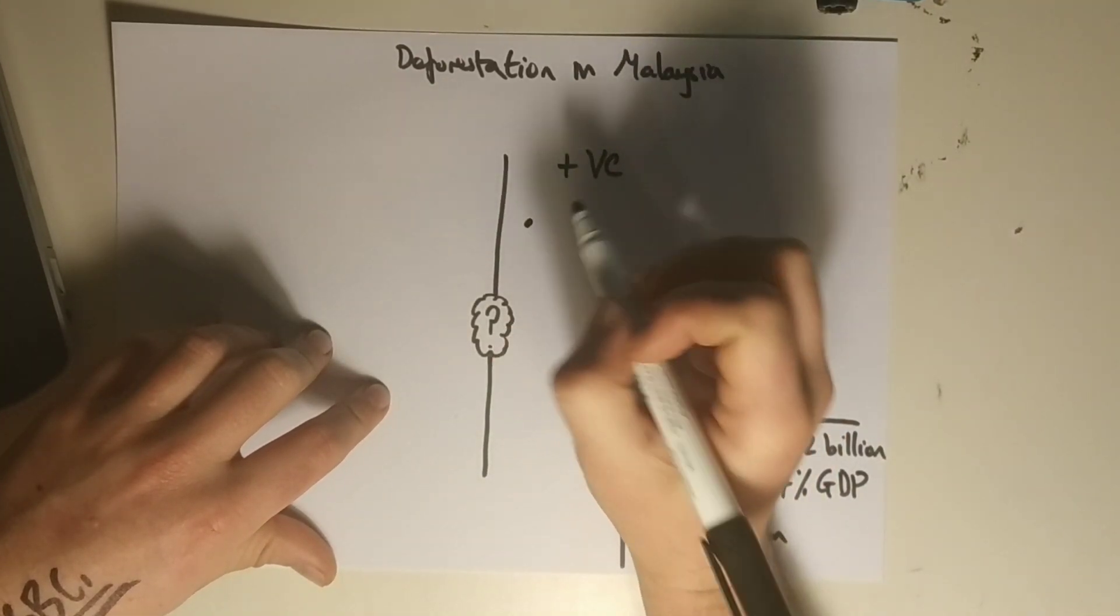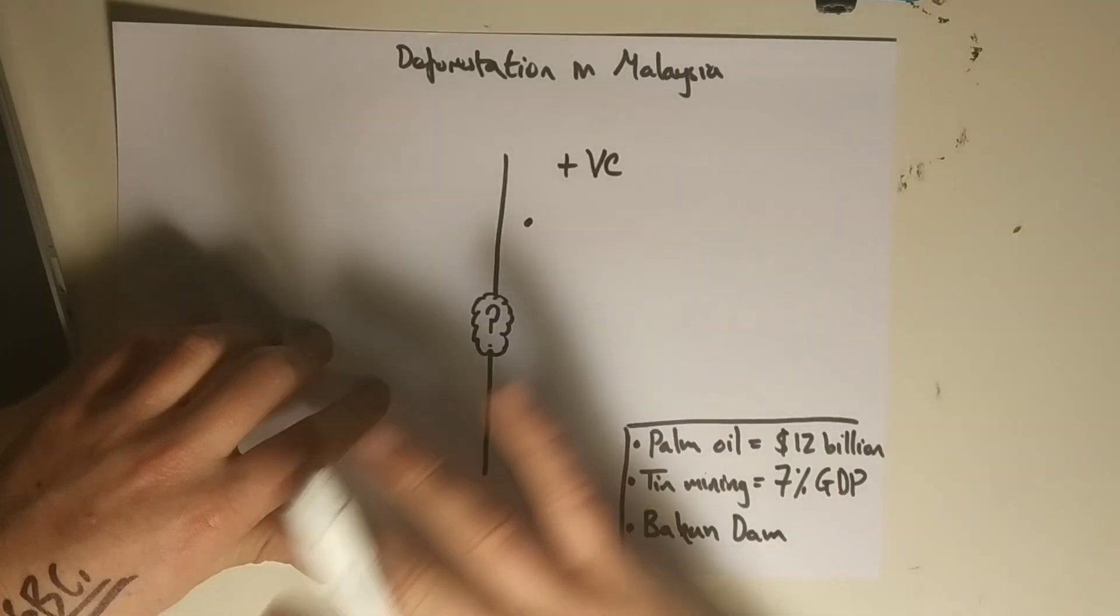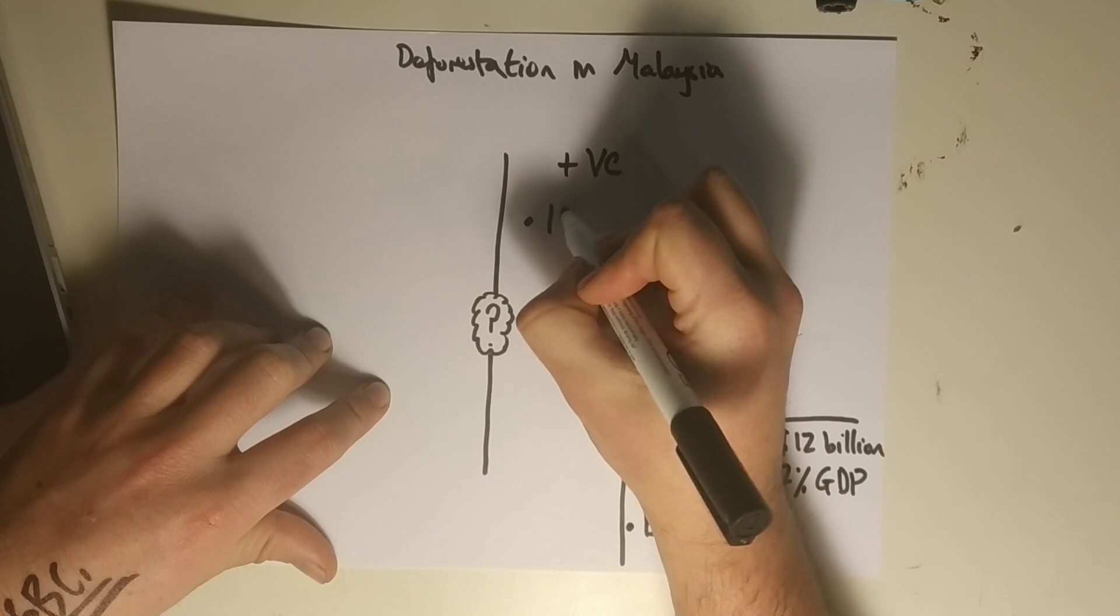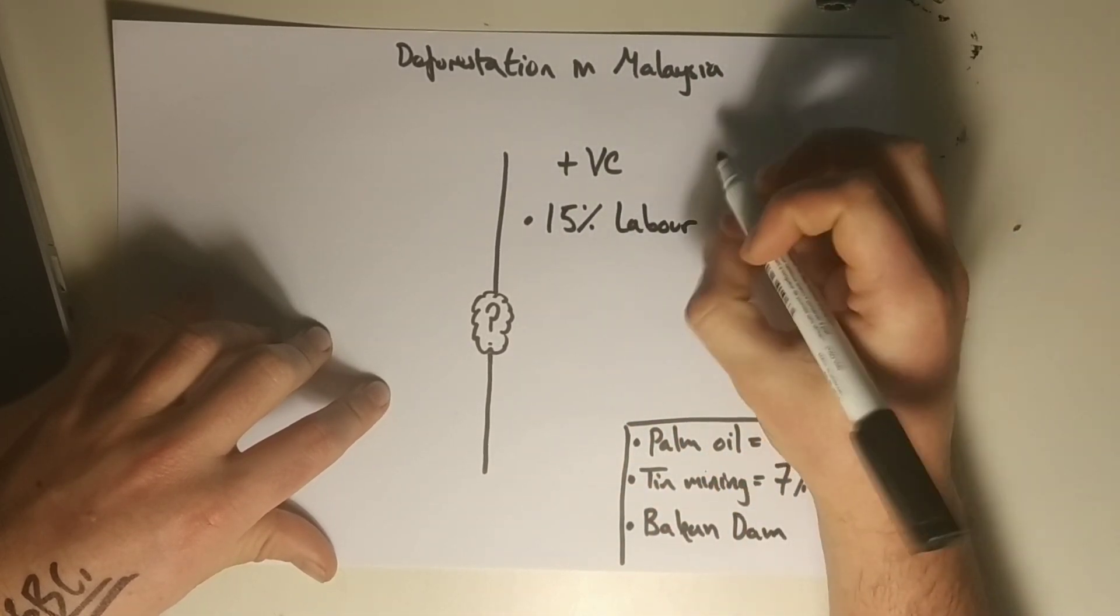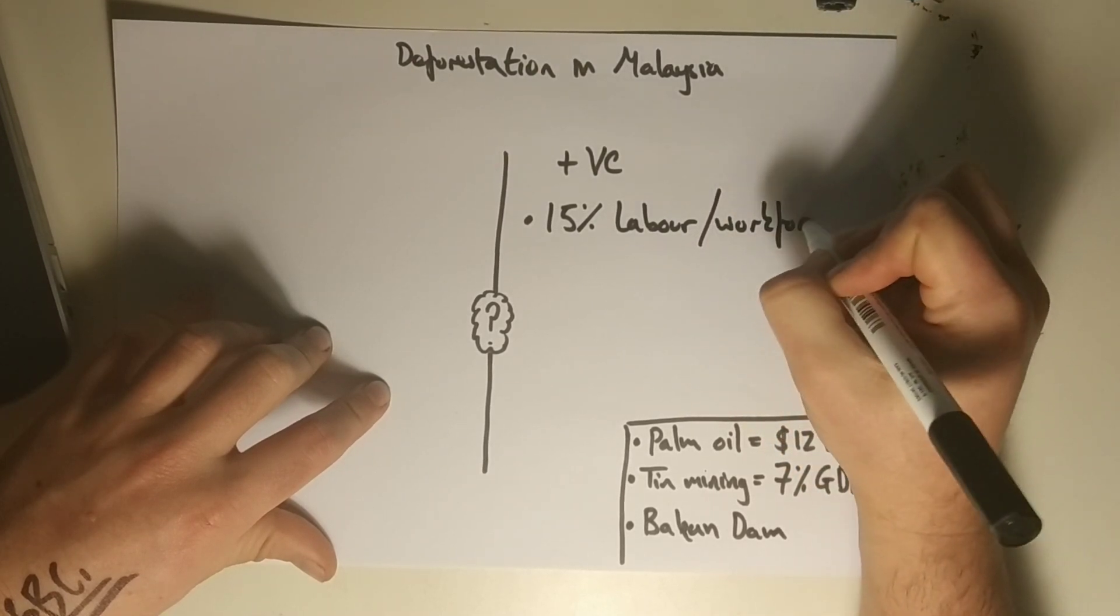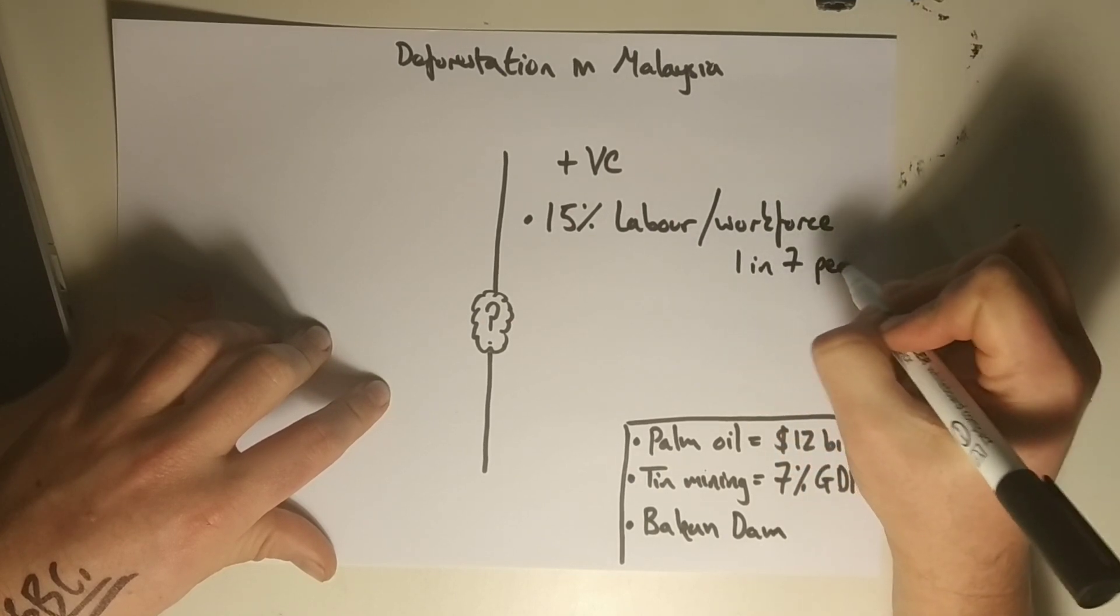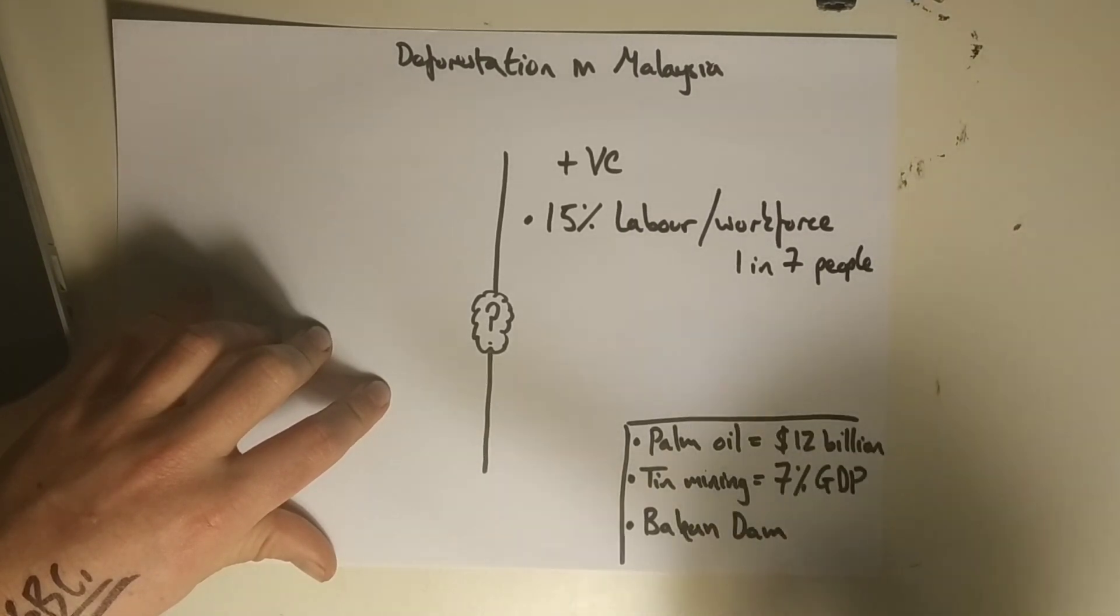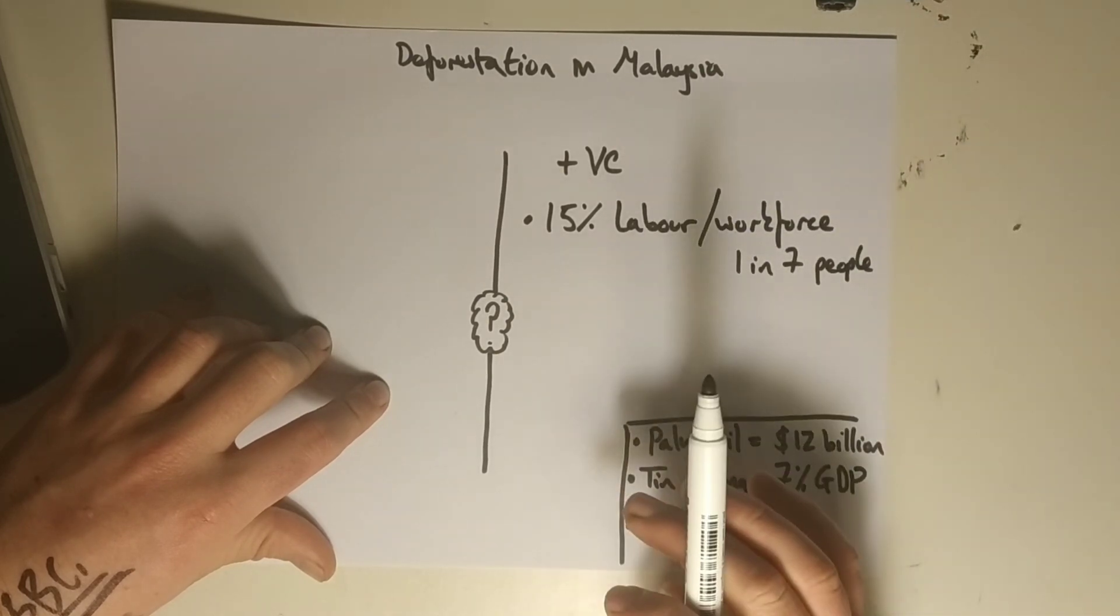First of all, industries in Malaysia that are related to deforestation, whether that's in agriculture or directly in deforestation, make up about 15% of the labour force, the workforce. That actually is about one in seven people. That's huge both economically and socially. Remember, social and economic starts to blend together when we start looking at GCSE and A level geography.